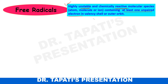Instability or reactivity are gained due to the unpaired electron present in the valency shell or outer orbit. In order to gain stability, they can either donate or accept an electron from other molecules. Therefore, they can behave as reductants or oxidants respectively.